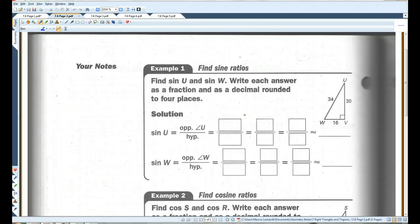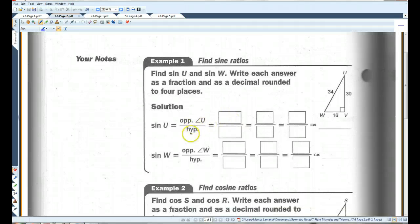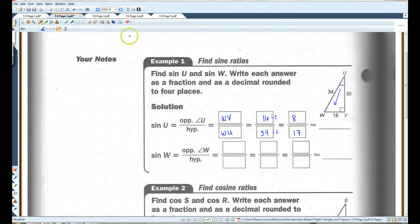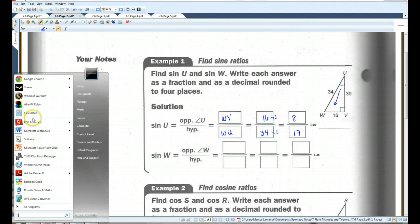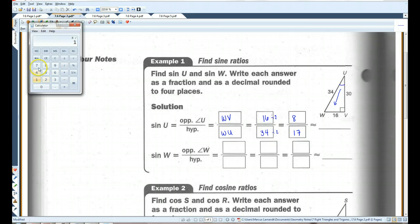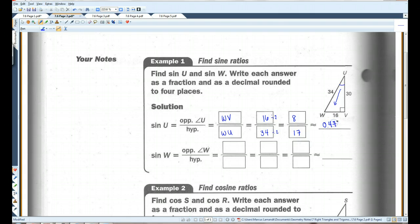Find sine of U and sine of W. Write each answer as a fraction and as a decimal rounded to four places. So, sine of U, opposite over hypotenuse. The side opposite U is 16. Actually, let's write this first. WV over WU. WV is 16, WU is 34. This can be simplified. If I divide top and bottom by two, I get 8 over 17. Let's pull out a calculator. 8 divided by 17 equals 0.4706.